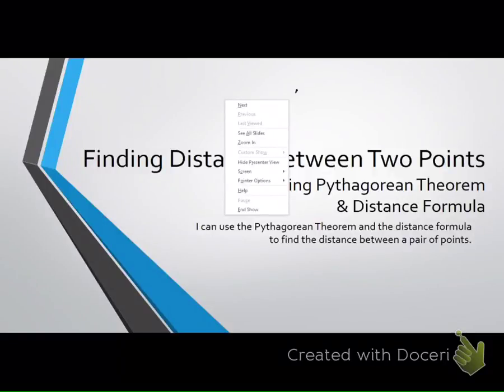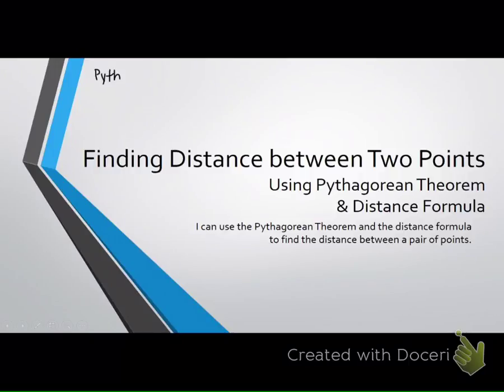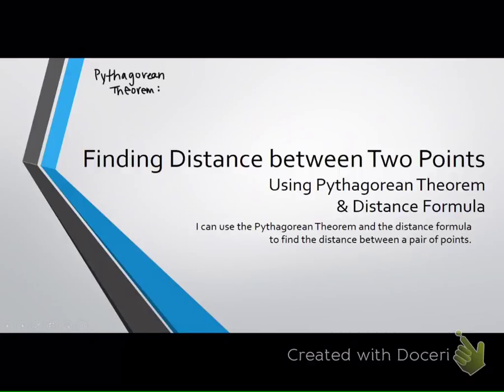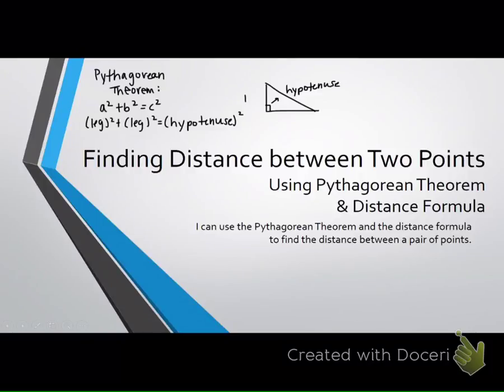Who can remind us what the Pythagorean Theorem is? Yes? A squared plus B squared equals C squared. So don't forget that the Pythagorean Theorem is A squared plus B squared equals C squared. To simplify, leg squared plus leg squared equals hypotenuse squared. And this is only in a right triangle. The hypotenuse is always across from the right angle. So, just a little recap of yesterday's lesson.